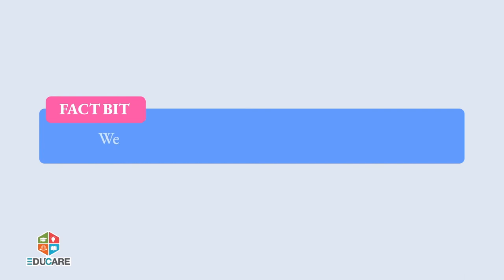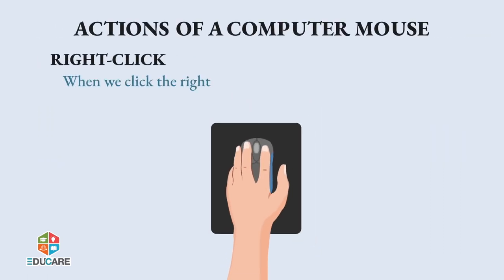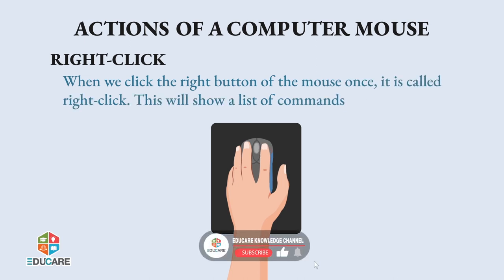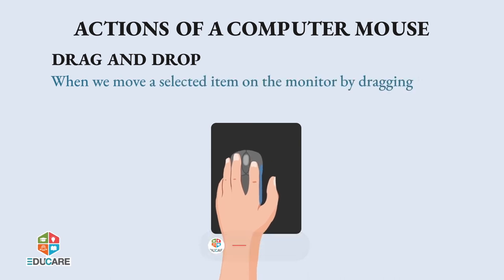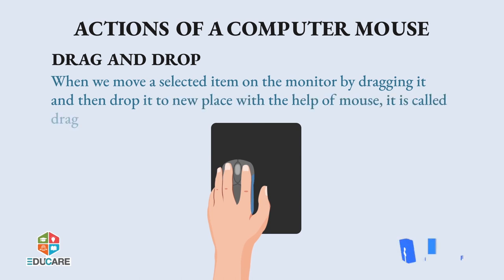Fact bit: We click or double click using the index finger. Right click: When we click the right button of the mouse once, it is called right click. This will show a list of commands for the selected item. Drag and drop: When we move a selected item on the monitor by dragging it and then drop it to a new place with the help of a mouse, it is called drag and drop.